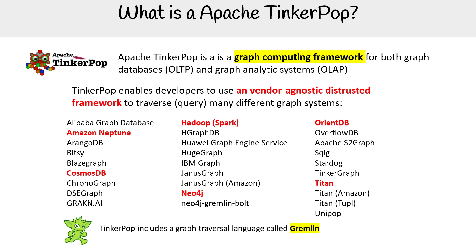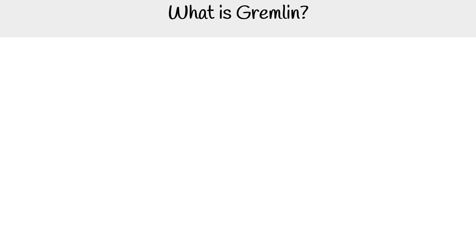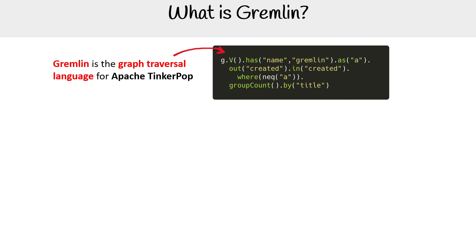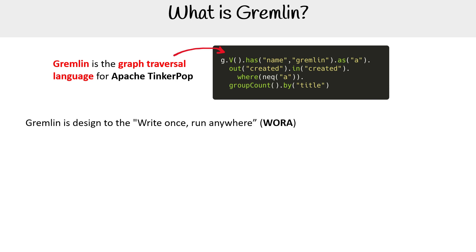TinkerPop includes a graph traversal language called Gremlin, which is a single language that can be used across all these graph systems. It looks like this. Even without TinkerPop, some databases like Cosmos DB support this language by default, so you don't necessarily need TinkerPop to work with certain databases.